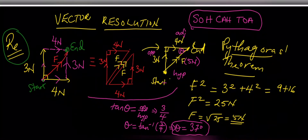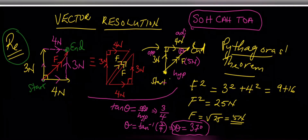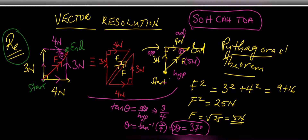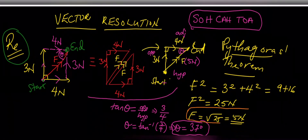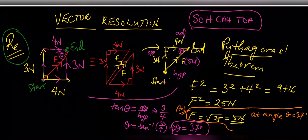Our final answer: using our right-angle triangle approach, we found our resultant force. The resultant force alone is not sufficient — if a tugboat is being towed, we must also state what angle the resultant lies with respect to one of the two forces. So our answer is five newtons at an angle of 37 degrees to the four-newton force.